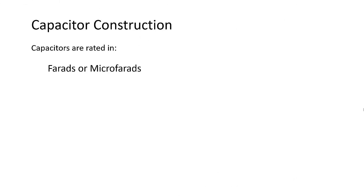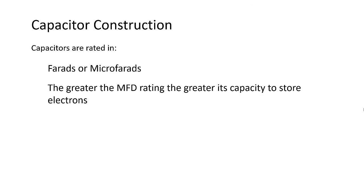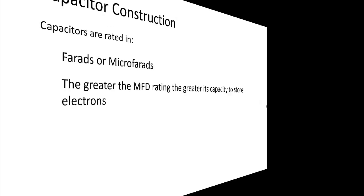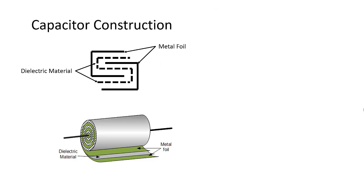Capacitors are measured in farads and microfarads. The greater the number, the more electrons of electricity it will hold. Construction of a capacitor is fairly straightforward. There are two strips of foil separated by a dielectric material. The dielectric material is the secret sauce of the capacitor.